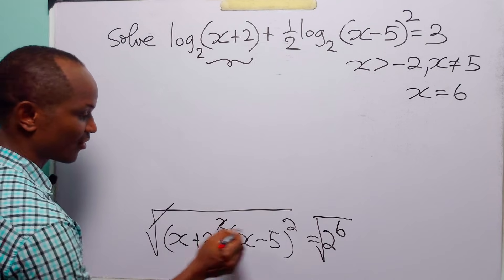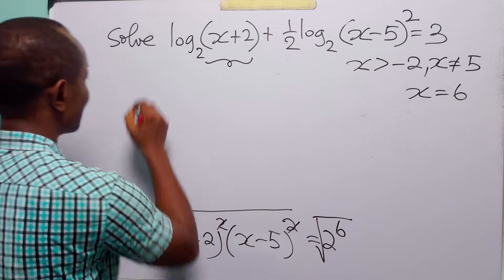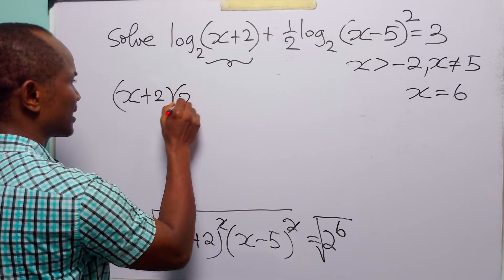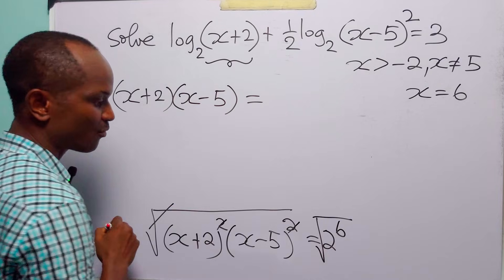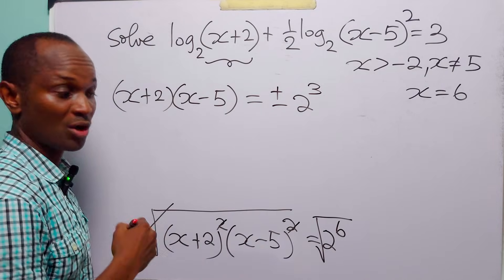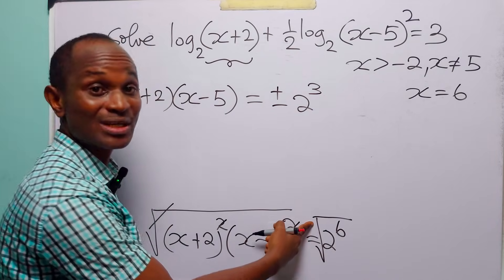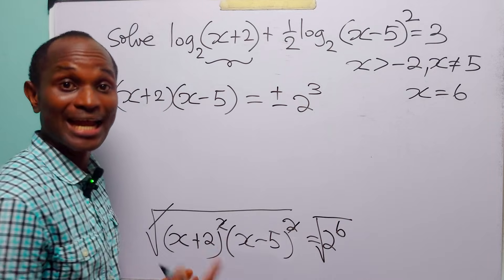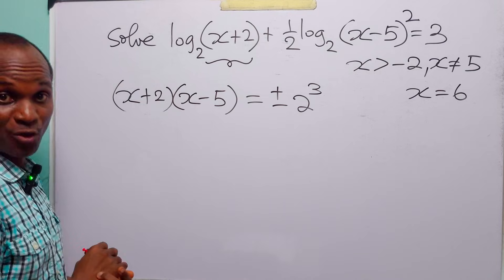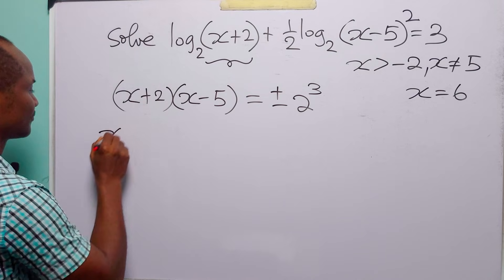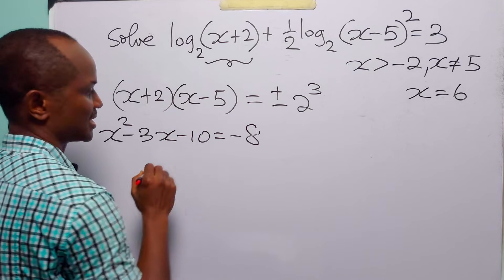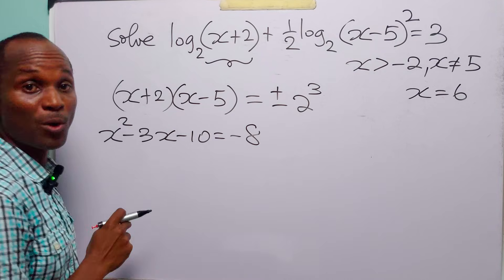Taking the square root removes the squares on the left-hand side, giving (x plus 2) times (x minus 5) equals plus or minus 2 to the power 3 — because the square root divides the exponent 6 by 2 to get 3. So we have either x squared minus 3x minus 10 equals minus 8, or x squared minus 3x minus 10 equals plus 8.